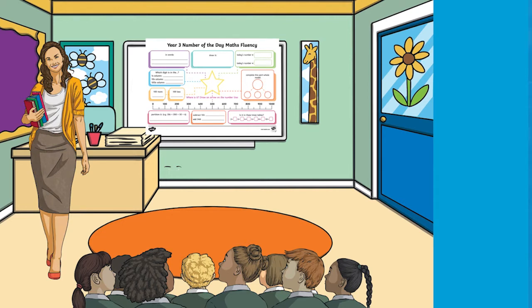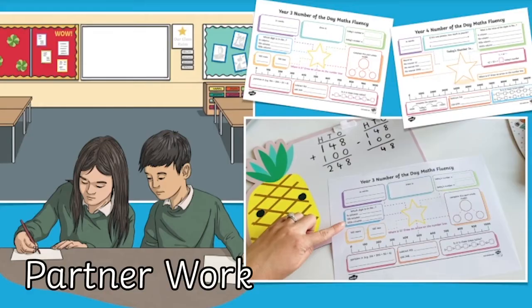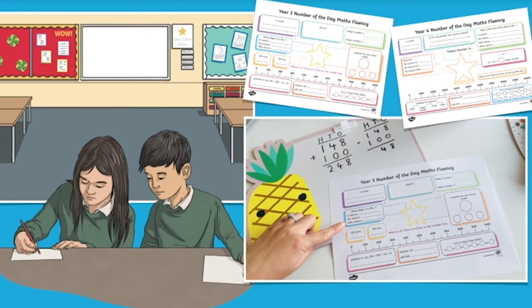You could work through some of the sections as a group asking the children to model their ideas for you. Or perhaps you could get the children to work with a partner. The children could take it in turns to have a look at their partner's answers to see if they can match it to the number problem on the word map.